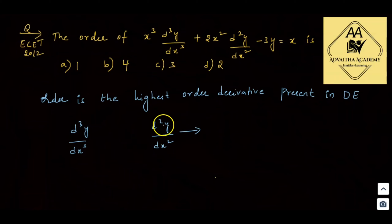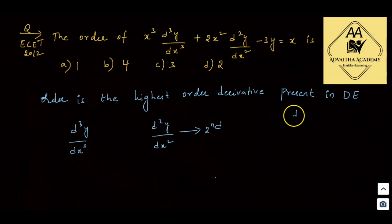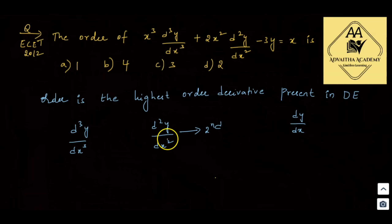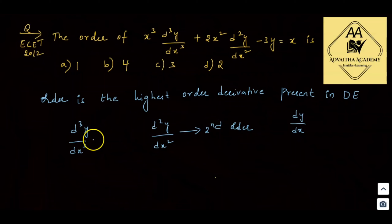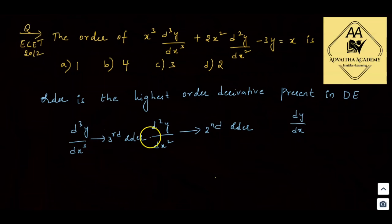dy/dx is the first order. d²y/dx² is the second order differential term. d³y/dx³ is the third order differential term. So this is the third order.